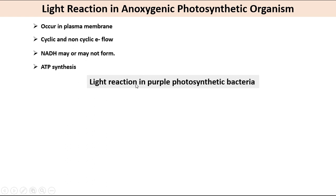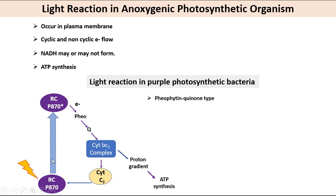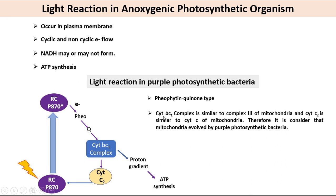In purple photosynthetic bacteria, an anoxygenic organism with no oxygen evolution during photosynthesis, a pheophytin-quinone-type photosystem is present. Light energy drives electrons from the reaction center P870 through pheophytin, quinone (Q), and the cytochrome BC1 complex, then through cytochrome C2 and back to the reaction center. Electron flow through the cytochrome BC1 complex causes proton pumping, creating an electrochemical potential that powers ATP synthesis. The cytochrome BC1 complex is similar to complex III of mitochondria, suggesting mitochondria evolved from purple photosynthetic bacteria.